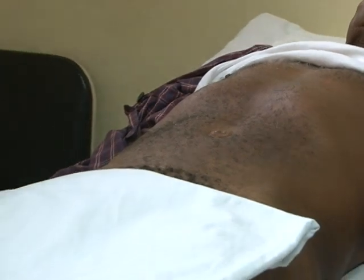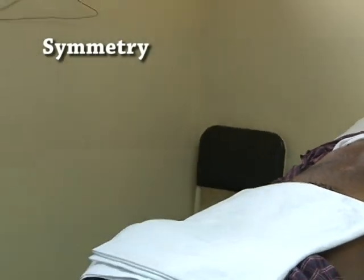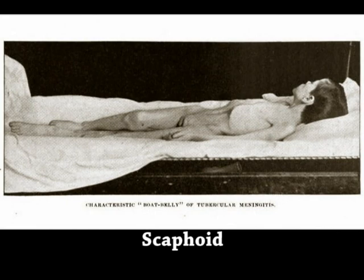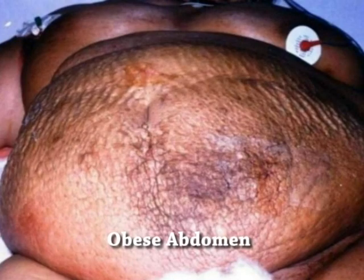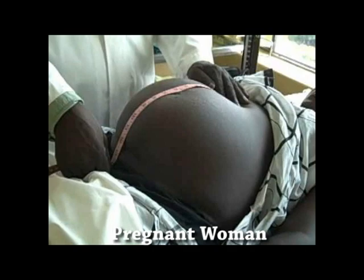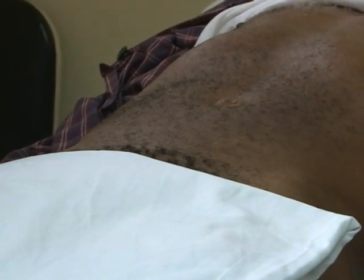On inspection of the abdomen, we take note of symmetry, shape, the presence of scars, skin lesions, or stomas. The shape of the abdomen may be flat or scaphoid, also called inverted, such as in starvation or wasting diseases, or it may be protuberant or obese. Visible enlargement of any organ such as the bladder, uterus, or liver must be noted. The presence and site of a surgical scar, sinus, or fistula may indicate underlying pathology.